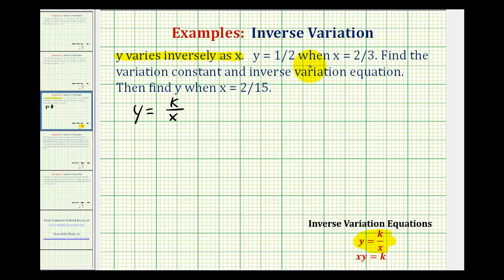Next we're told y equals one-half when x equals two-thirds. We want to find the variation constant, which is k, and the inverse variation equation. Then we want to find y when x equals two-fifteenths. So we'll start by finding the variation constant.